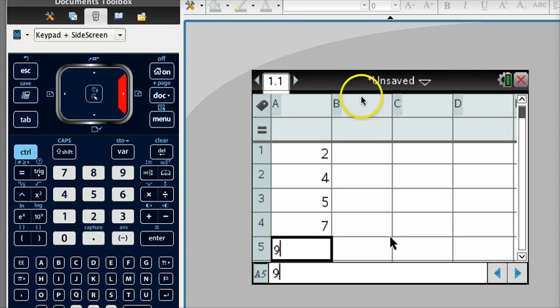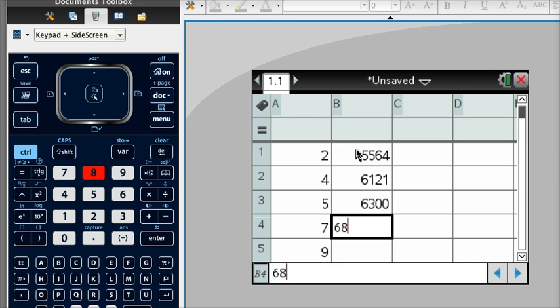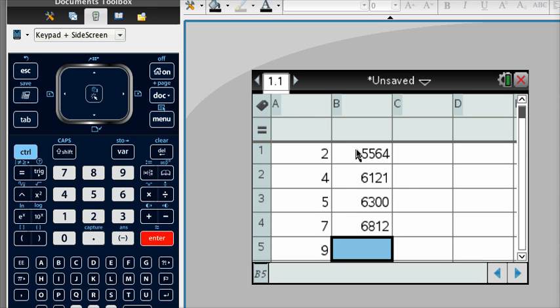And you're going to just list those. You're going to come under b and enter those numbers. 5564, 6121, 6300. And I'm just taking these numbers from under population. And the last one is 7422.